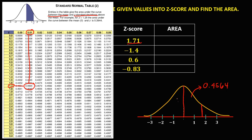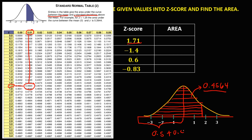Since this Z-score is positive, we are looking for the area to the left of 1.71. Half of the curve has an area of 0.5, so we add 0.4564 to 0.5. Therefore, the total area is 0.9564.